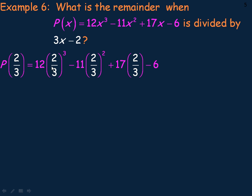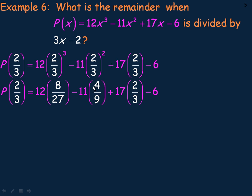So we put 2 thirds in place of x everywhere. Over here at the beginning, multiply by 12, we're cubing the 2 thirds. 2 cubed is 8, 3 cubed is 27 in the denominator. 2 squared is 4, and 3 squared is 9 in the denominator. There's no other powers over here.